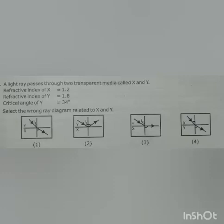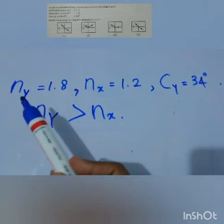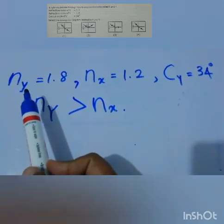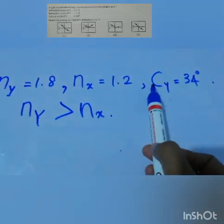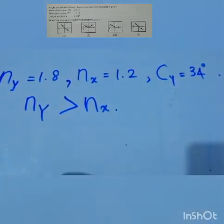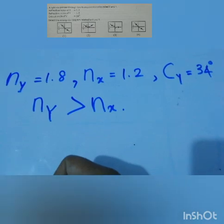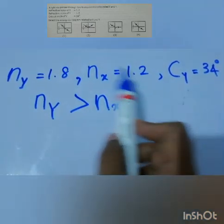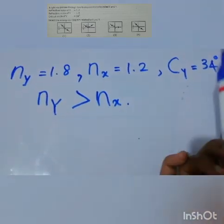A light ray passes through two transparent media called X and Y. Now let's discuss this question. As per the question, the given data are: refractive index of Y equals 1.8, X equals 1.2, and the critical angle of Y is 34 degrees. They have asked to select the wrong ray diagram related to X and Y. Here, you know, the refractive index of Y is greater than X.